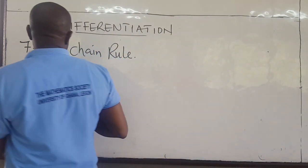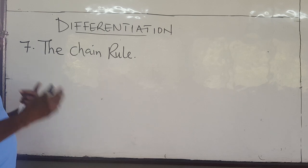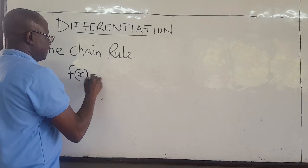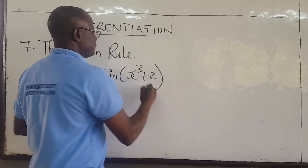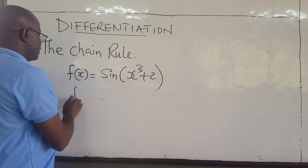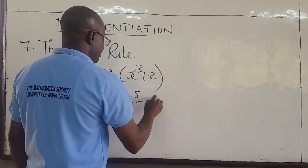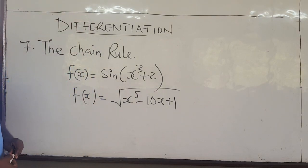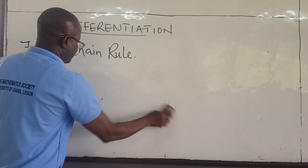The chain rule is very important, especially if you have a function which is embedded in another function. For example, suppose f of x is given by sine of x cubed plus 2. How do you find the derivative of that? Or suppose f of x is equal to the square root of x to the 5 minus 10x plus 1. The chain rule comes in handy when you want to find the derivative of functions like that.